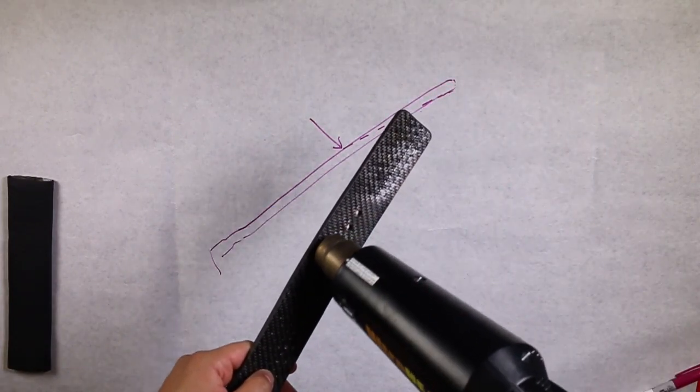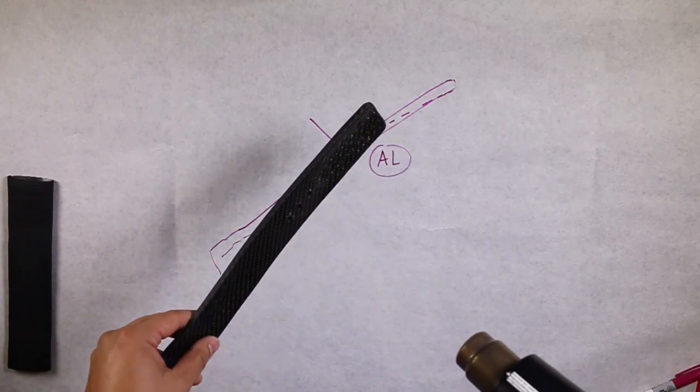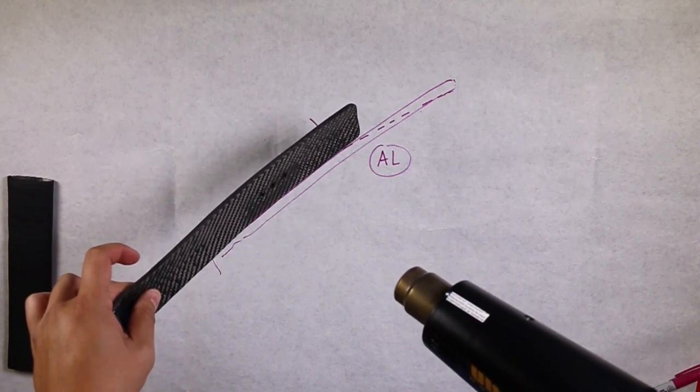To heat the strut, use a heat gun on high setting located approximately four to six inches from the surface of the strut.